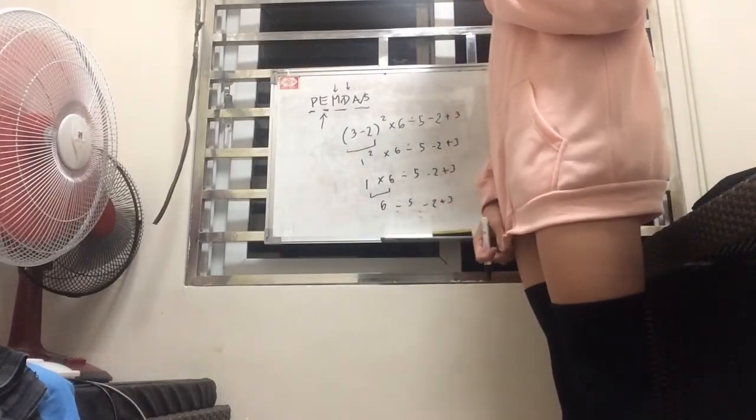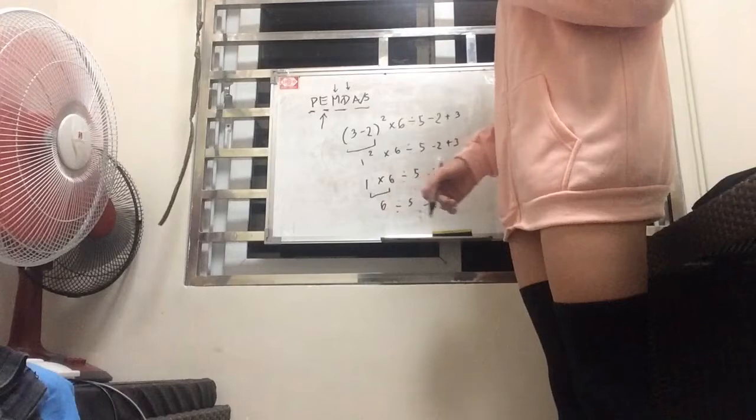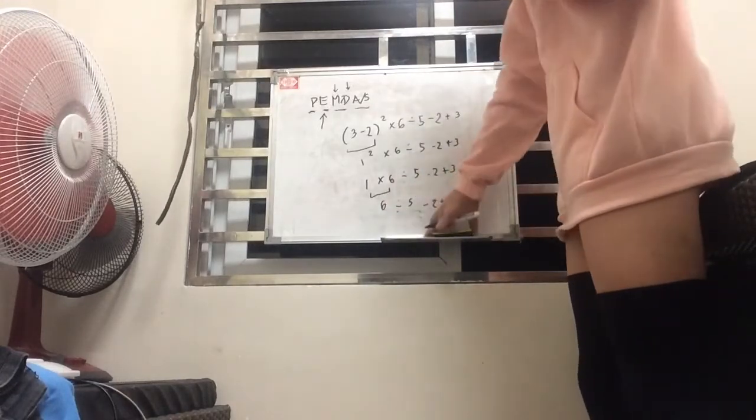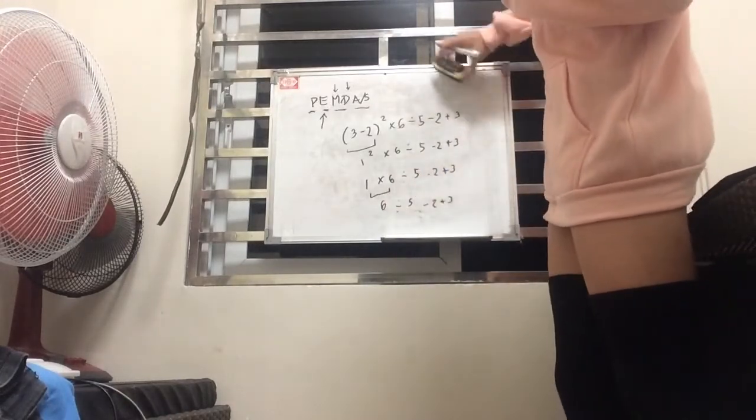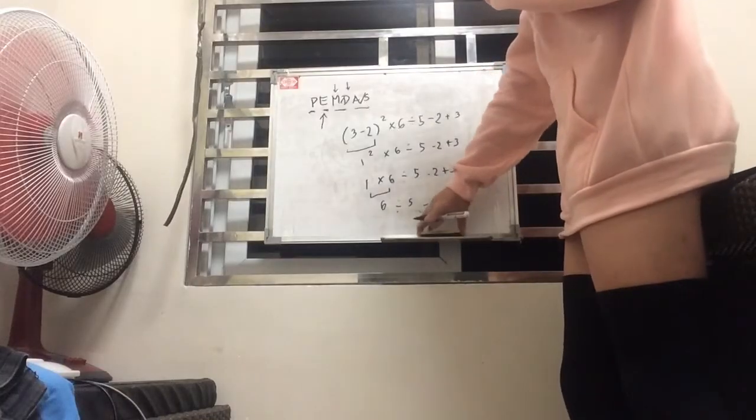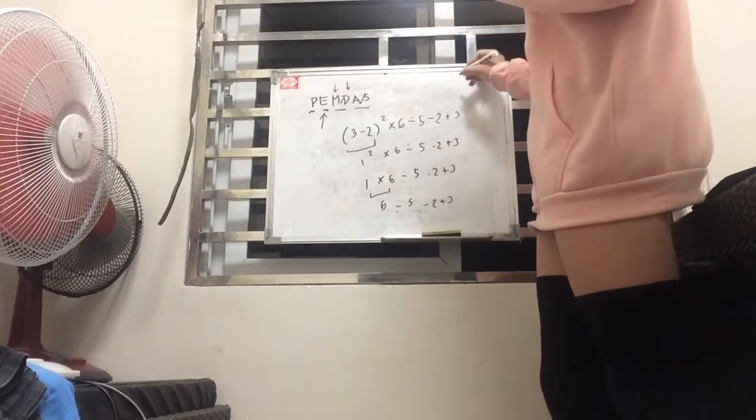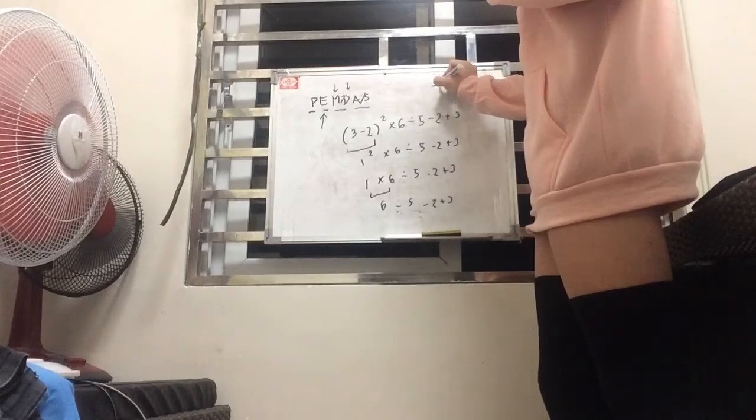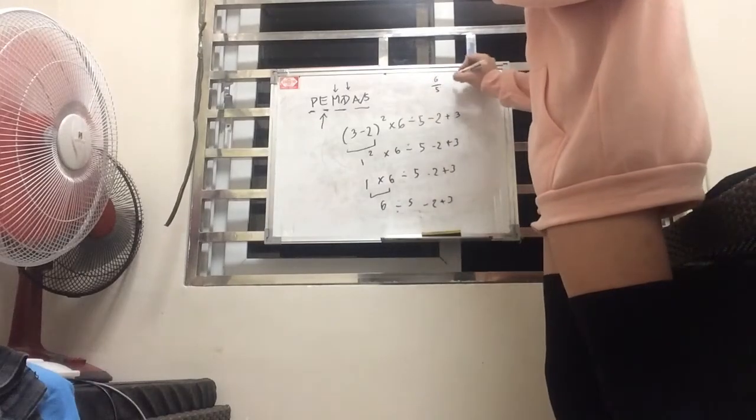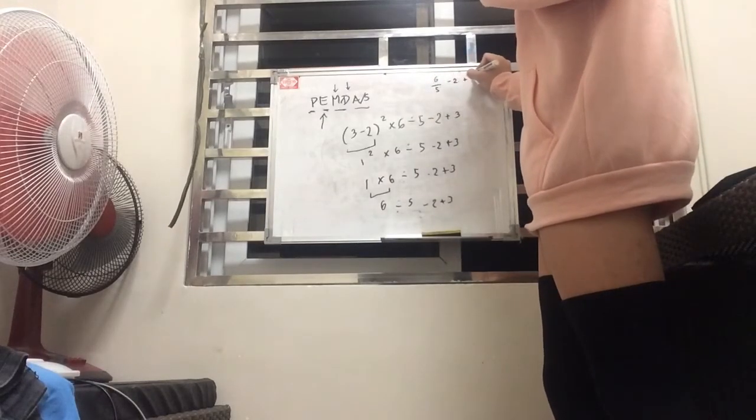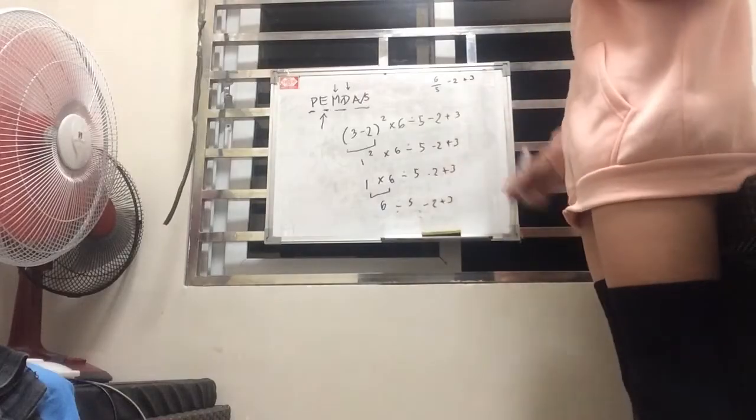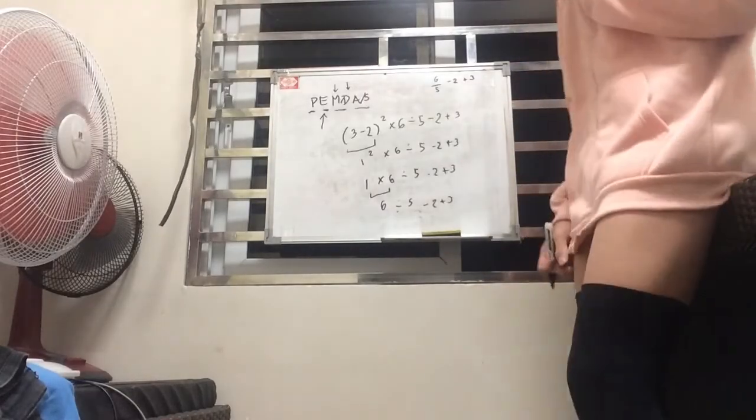And next, we do the division. So 6 over 5 is actually going to be a fraction. So let me just, I'll just do it here above. So 6 divided by 5 is a fraction, minus 2 plus 3. It's here above. I don't know if you guys can see it.